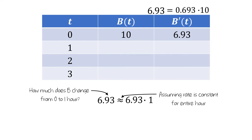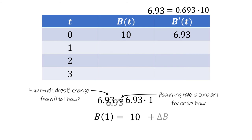This isn't telling us that there were 6.93 bacteria at one hour — it's giving us an approximation of how many were added. But what we can do is add this increase to the initial number of bacteria. That is, we can compute the number of bacteria at one hour by adding the change in the number of bacteria to the initial number of bacteria. We know that there are 10 bacteria at zero hours, and we added 6.93 bacteria over the first elapsed hour, so there are 16.93 bacteria after one hour has elapsed.